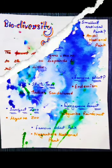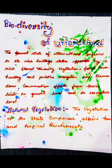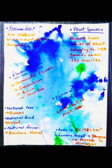Now have a look at the biodiversity of Uttarakhand. The present state of Uttarakhand is known for its rich heritage, supported by rich floral diversity, vegetation, and more. Here I have written some important information about the biodiversity of Uttarakhand.